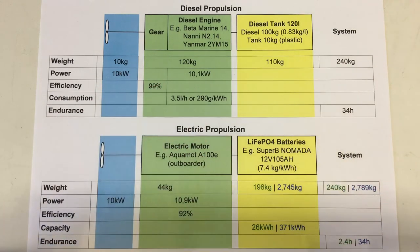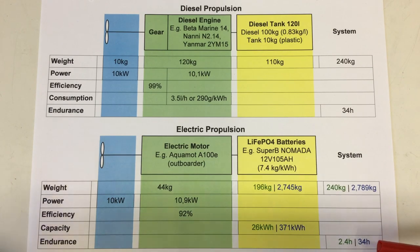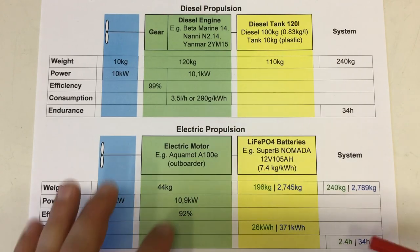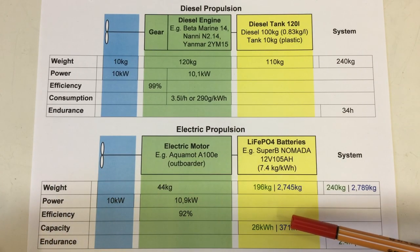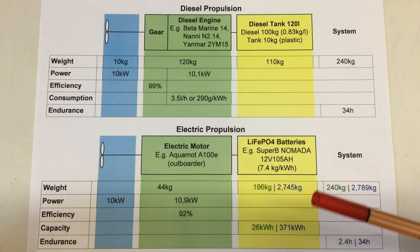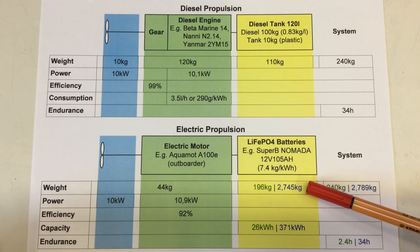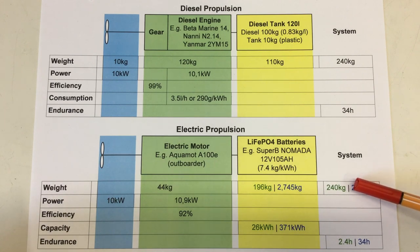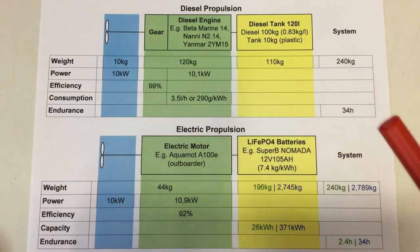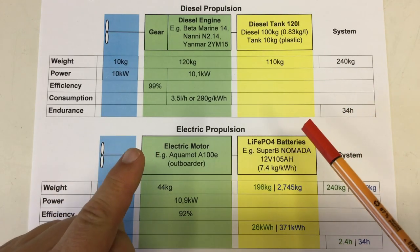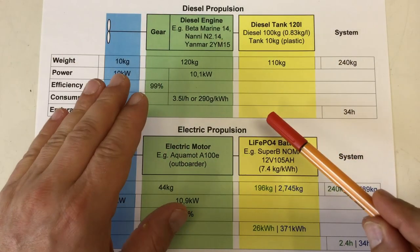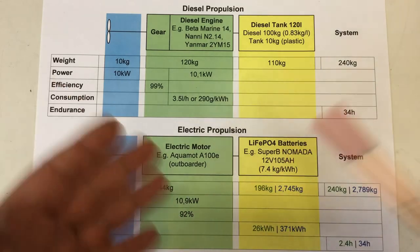Let's have a look at the other case. To get to 34 hours endurance at full throttle 10.9 kilowatts, we need 371 kilowatt hours battery capacity, which weighs in at 2745 kilograms and leads us to a total system weight of 2789 kilograms. Where have you seen that problem before? Electric cars? Unfortunately, it gets even worse, but just a little.